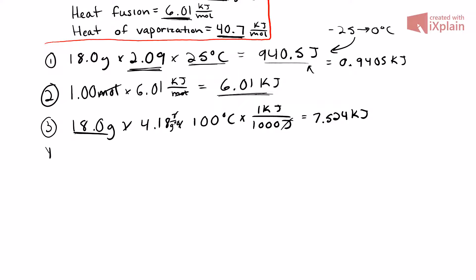Step 4: we use the heat of vaporization to convert water to steam. We take 1 mole of water and multiply by the heat of vaporization, which is 40.7 kilojoules per mole. The moles cancel out, leaving us with 40.7 kilojoules.